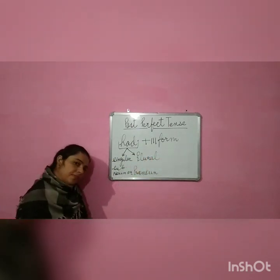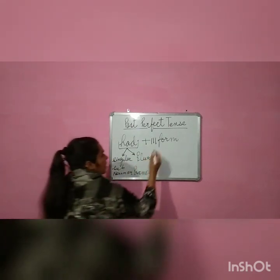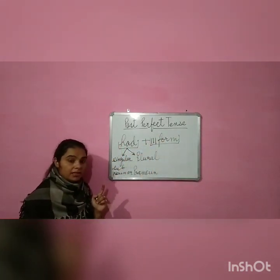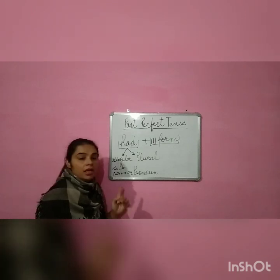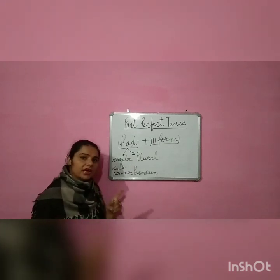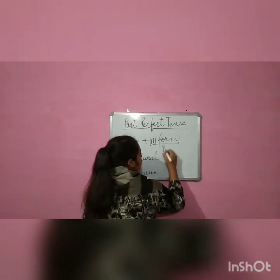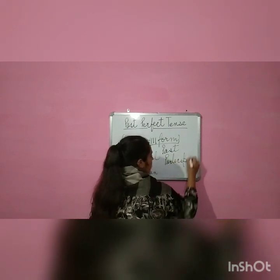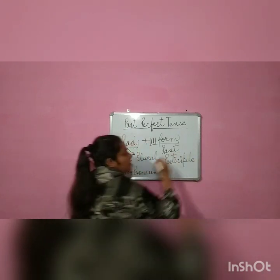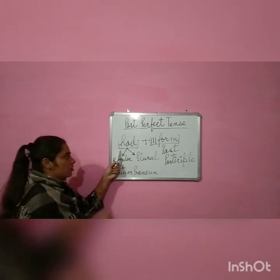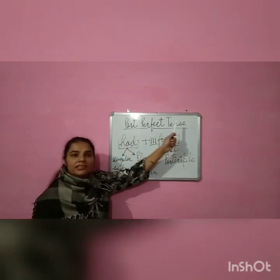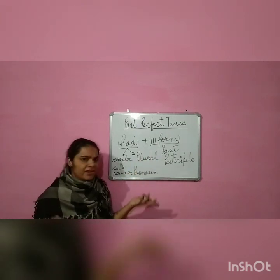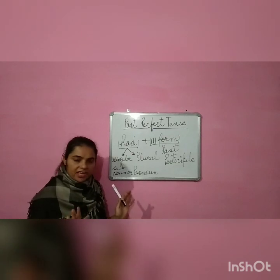And third form ka doosra naam kya hai? Remember, previous wala jo humne kara tha, present perfect tense mein usmein kya tha? Third form ko doosra naam kya hai? What is another name for third form? Past participle. So this is the rule of past perfect tense — the use of had plus third form. Very simple it is. Bhoat easy hai. Very easy to remember.